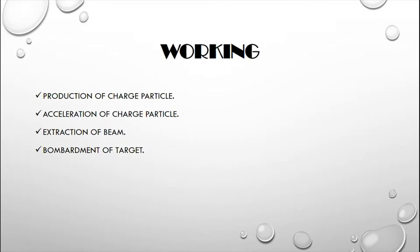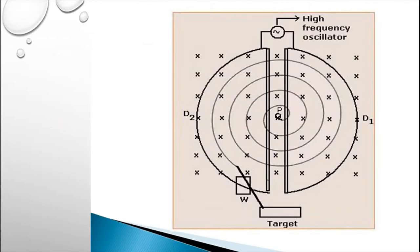Working: production of charged particles, acceleration of charged particles, extraction of beam, bombardment of target. When a positive ion is emitted from the source, it is accelerated towards the D having negative potential at that instant of time. As we have seen in the picture, the particle placed in the center of the D's is positive, so it moves towards the negative D.